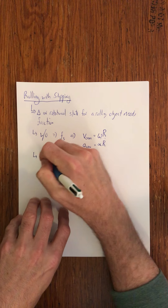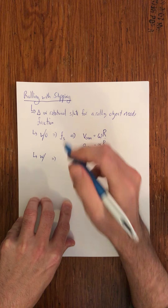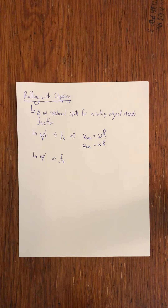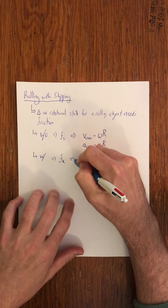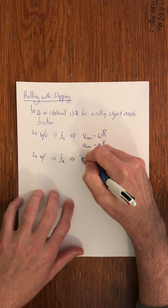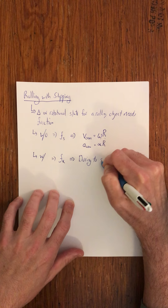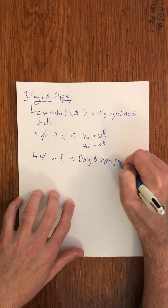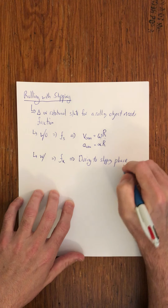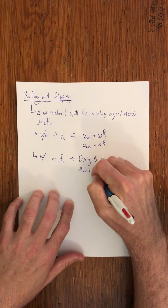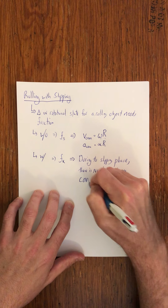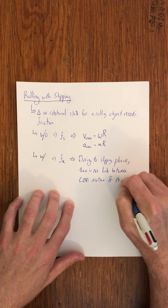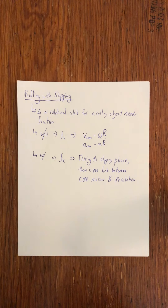When we have rolling with slipping, the friction involved is going to be kinetic friction, because the point of contact is going to be slipping past the ground in some way. During the slipping phase — and I say slipping phase because that has an interesting implication — there is no link between the center of mass motion and the rotation. That's the critical idea here.